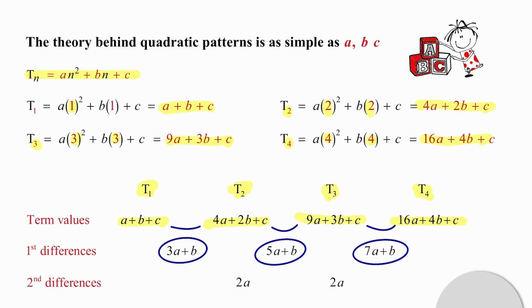The differences between these first differences is a constant value, always represented by 2a. So we are going to be looking for values first to do with a, then to do with a plus b, and then to do with a plus b plus c. Hence, this is as simple as a, b, c.